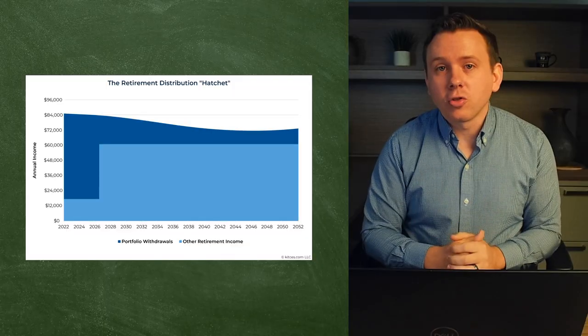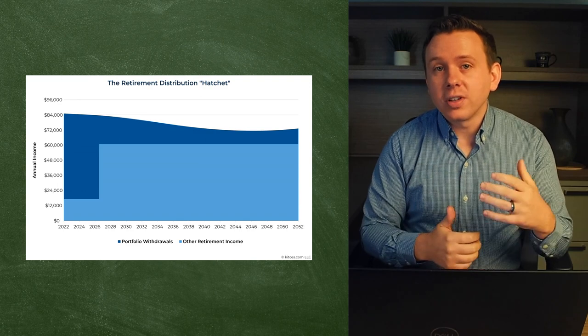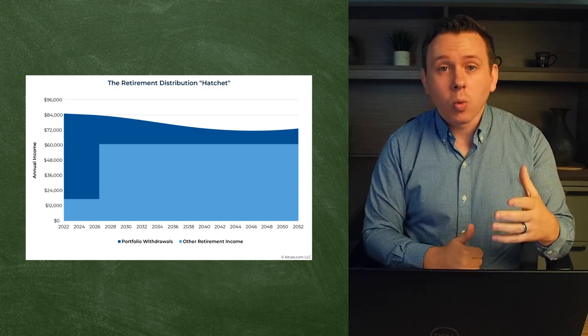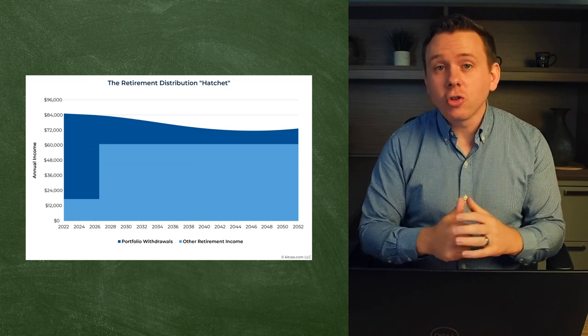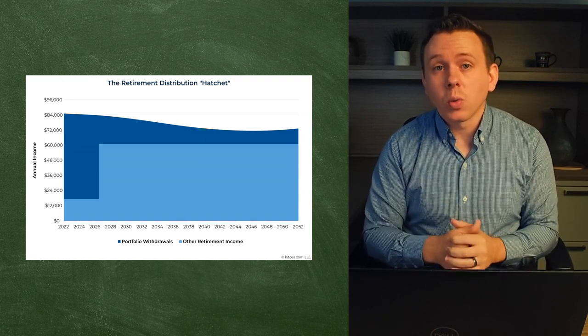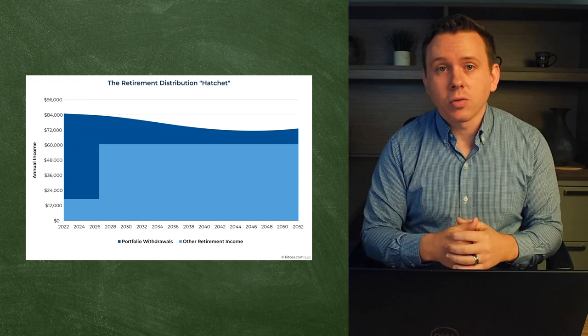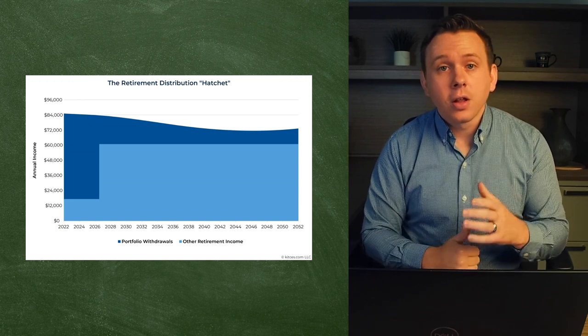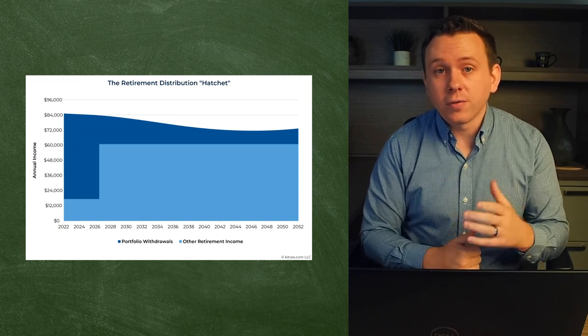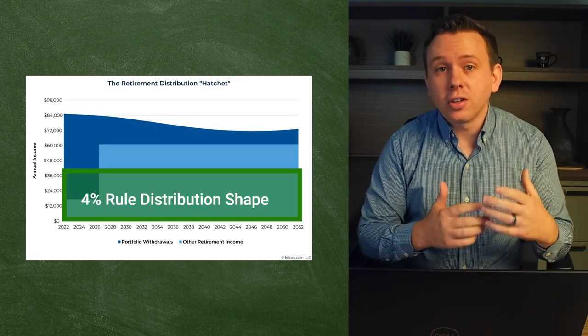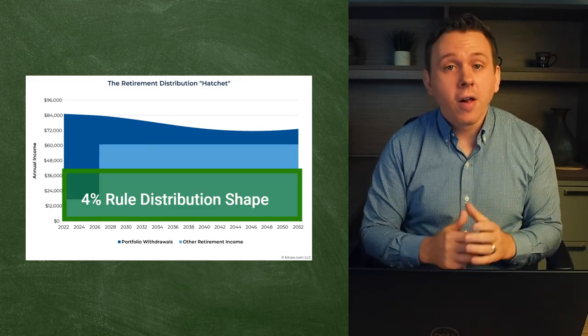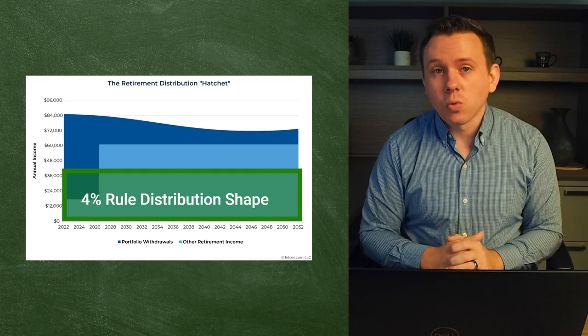So why is this not useful information in the real world? Let me show you. The retirement distribution hatchet refers to the typical shape of distributions more realistically taken from portfolios in retirement. This chart is adjusting for inflation, so it's showing what we would refer to as real spending, or inflation-adjusted spending. The 4% rule also provides inflation adjustments, so here's a quick look at what an inflation-adjusted distribution pattern would look like for someone who's following a 4% rule.